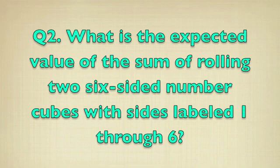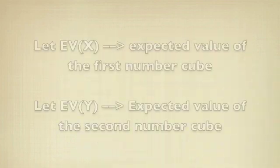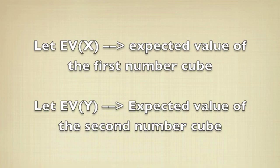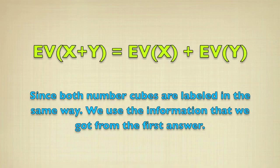Moving on to our next question, what is the expected value of the sum of rolling 2 six-sided number cubes with sides labeled 1 through 6? Now, you might think it's similar, yet it's related to each other. So, we can label that, let EV of X represent the expected value of first number cube, and EV of Y, second number cube.